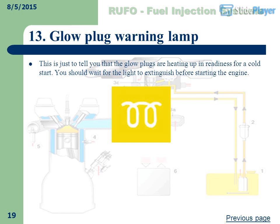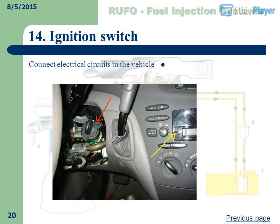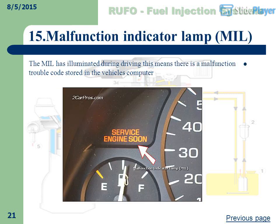Glow Plug Warning Lamp: This lamp indicates that the glow plugs are heating up in readiness for a cold start. You should wait for the light to extinguish before starting the engine. Ignition Switch: Used to connect electrical circuits in the vehicle.